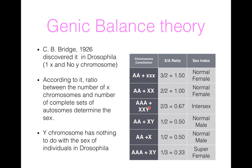With 3A plus 2X and Y, since Y has nothing to do with sex in Drosophila, the ratio is 2 by 3, which equals 0.67. That is between 0.5 and 1, so it is an intersex. With 2A plus X and Y, the ratio is 1 by 2, which equals 0.50 — that is a normal male.